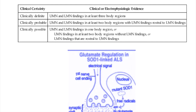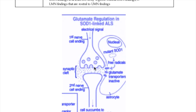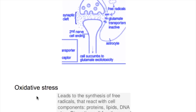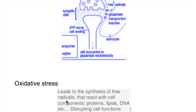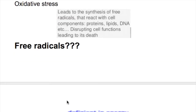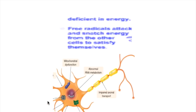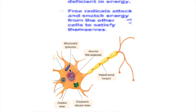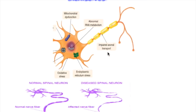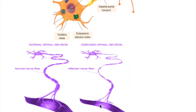Superoxide dismutase 1 normally detoxifies free radicals, but when mutated, it becomes toxic to the motor neuron. The excitotoxic reaction causes oxidative stress, and oxidative stress leads to the generation of free radicals. Free radicals are highly reactive and damage other cell organelles, disrupting the function of mitochondria, endoplasmic reticulum, and the nucleus. This results in impaired axonal transport, causing cell death and muscle atrophy.